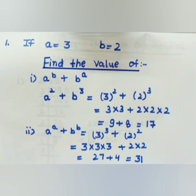If a equals to 3 and b equals to 2, find the value of a to the power b plus b to the power a. So a is given to us as 3. We write 3 to the power 2, plus b to the power a, which is 2 to the power 3.